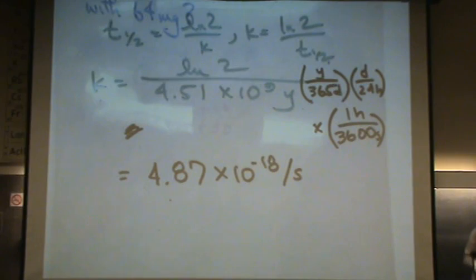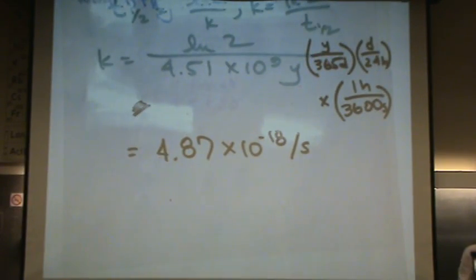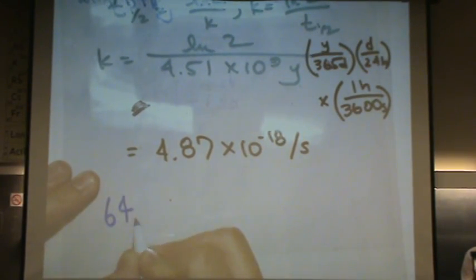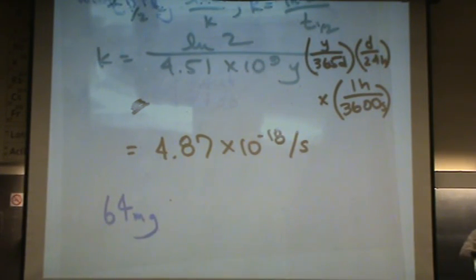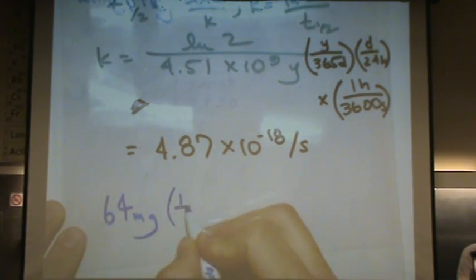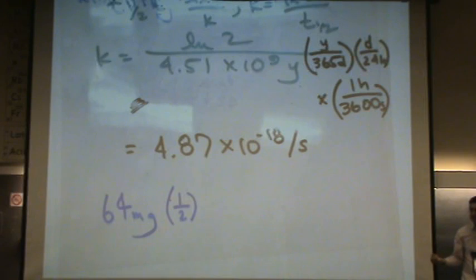The way you do that part is just say, well, we started with 64. And this part of the problem is just about understanding what a half-life means. After one half-life, I'd have 32 left. So half of the original amount would be left over.